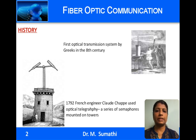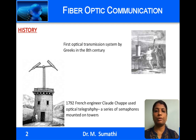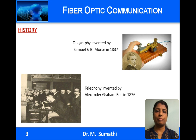The first optical communication system can be considered to be optical telegraphy, invented by the French engineer Claude in the year 1792. Optical telegraphs are nothing but semaphores mounted on towers with two arms, and the position of the two arms can be varied to represent various alphabets. Using this, messages were transmitted over long distances. Optical telegraphy was popular on the European continent for nearly 40 years, until electrical communication came into existence with the invention of telegraphy by Morse and telephony by Graham Bell.